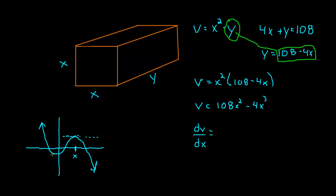Let's differentiate this. dV/dx = 216x - 12x². Now we set it equal to 0, and I'm going to factor a 4x out of this. I'm left with 4x(54 - 3x) = 0.